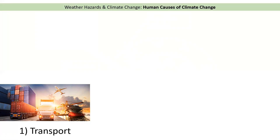The first human cause is transport. If you get on the bus, drive a car, get a plane on holiday, or even buy something in a shop that's been transported on a big ship, all of those things rely on burning fossil fuels. For example, your car: you put oil into it, the oil gets burnt by the engine, and that releases carbon dioxide.